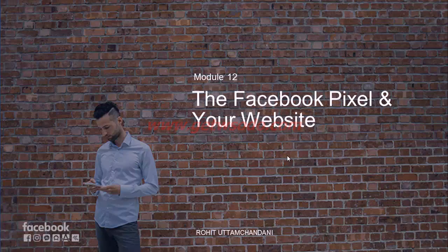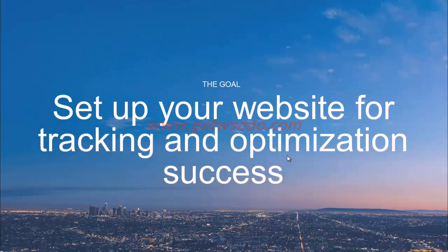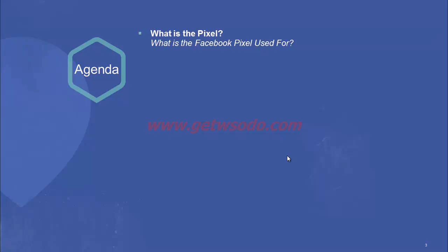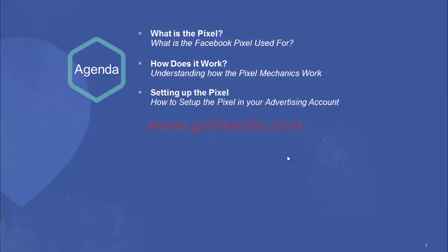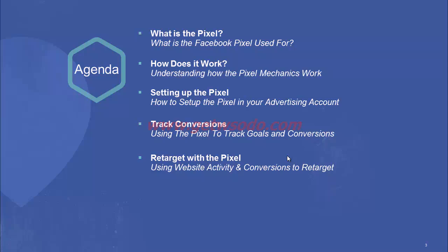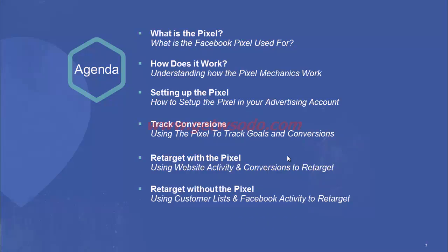Hi guys, welcome to module 12, which is on the Facebook pixel. The objective of this module is to help you set up your website for tracking and optimization success with Facebook ads. The agenda for the session is to first help you understand what the pixel is, what it's really used for, how does it work, how do you set it up in your ad account, how do you use it to track conversions on your website, how do you use the pixel for retargeting, and how you can also retarget without the pixel using your customer lists and Facebook activity.